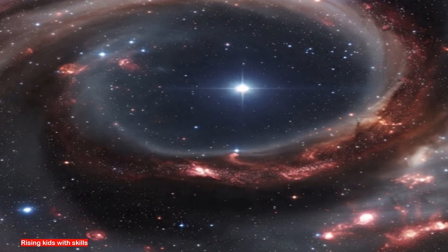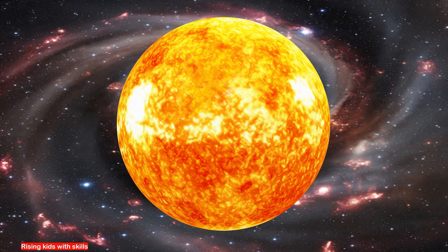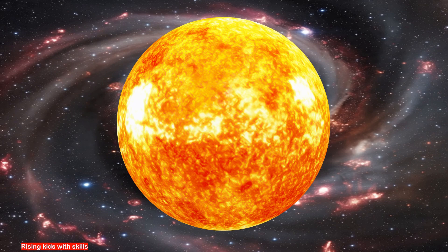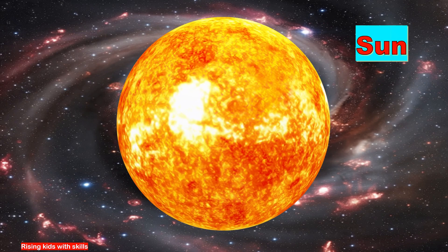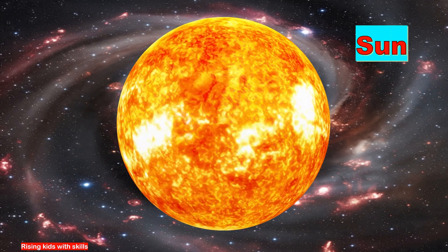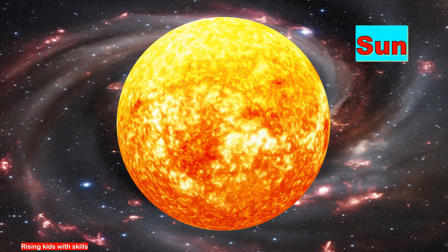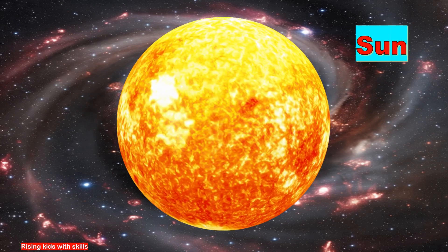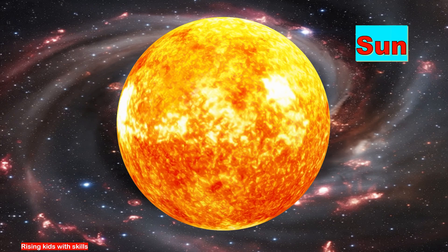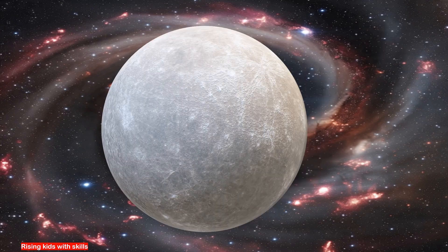Sun, the boss of the solar system. The Sun is the biggest and brightest object in our solar system. It's a giant ball of burning gas that gives light and heat to all the planets.